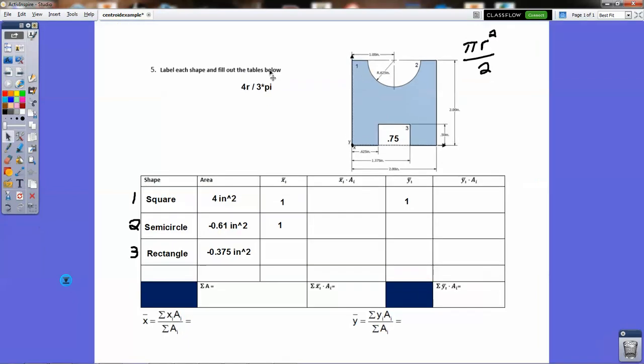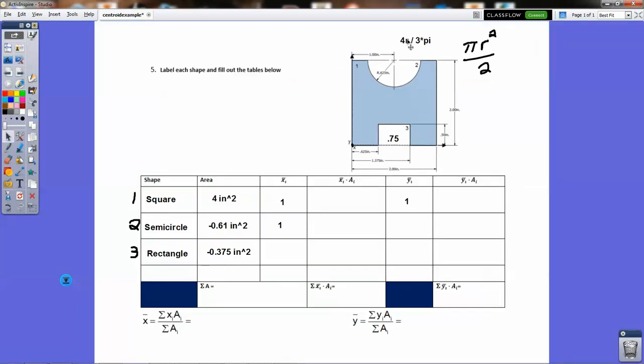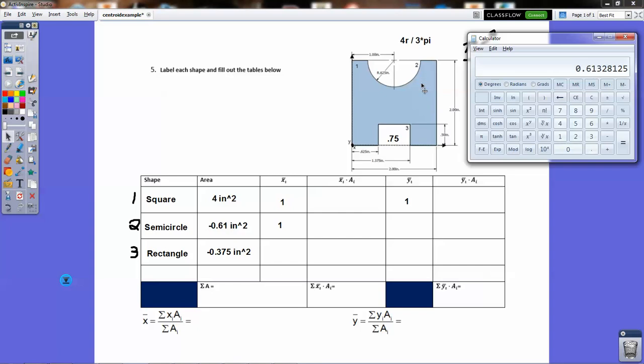So with this, we would have to get this radius and just do 4 times that and divide by 3 times 3.14. So we'll go 4 times 0.625, that's the radius, and then we're going to divide that by open parentheses, 3 times 3.14, and then that's going to be 0.265. Now don't enter that into the table because all that's telling us is how far away from this point right here, where my mouse is, is the centroid.